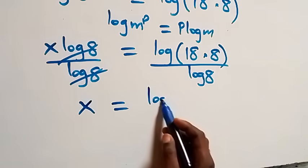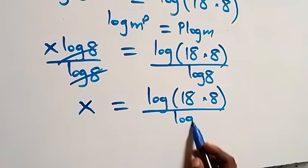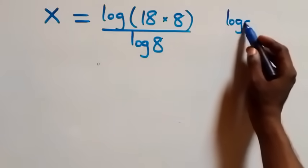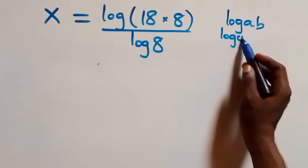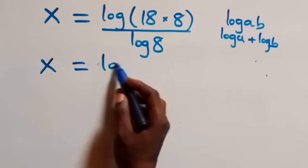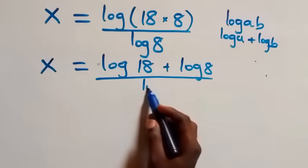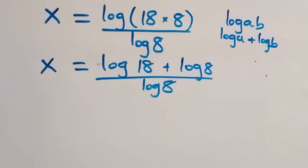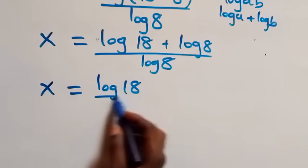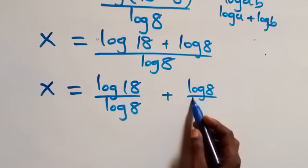Then we have x equals log(18 times 8) over log 8. From here, applying the law of logarithm — when we have log(a times b) it is the same thing as log a plus log b — this becomes x equals (log 18 plus log 8) over log 8. Then we separate this into two fractions and we have x equals log 18 over log 8 plus log 8 over log 8.